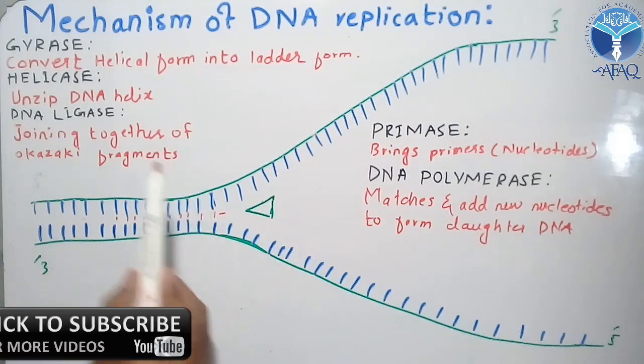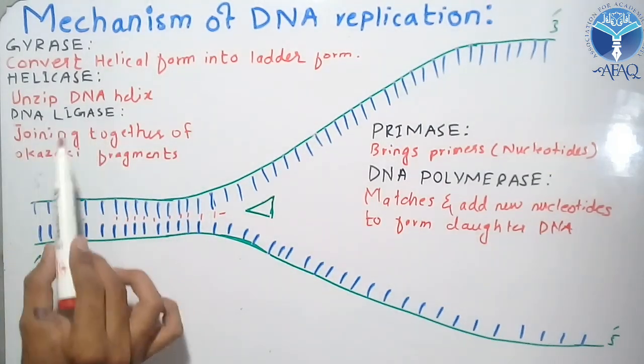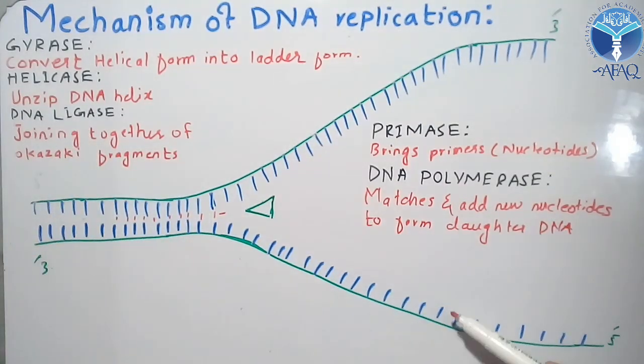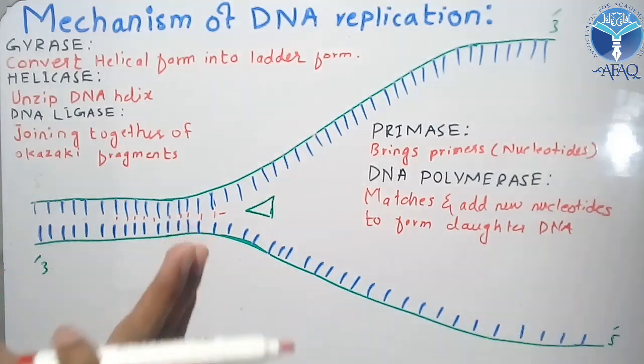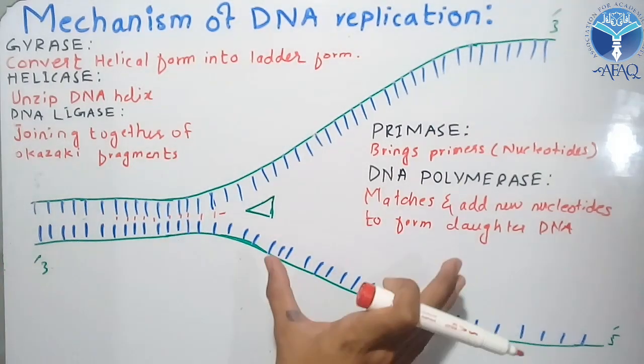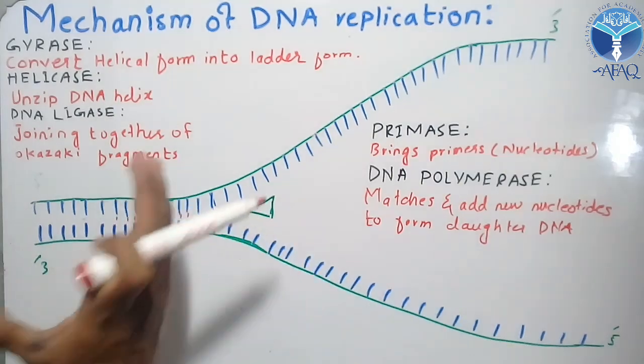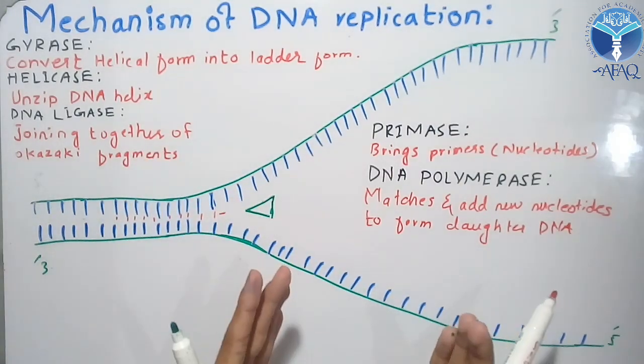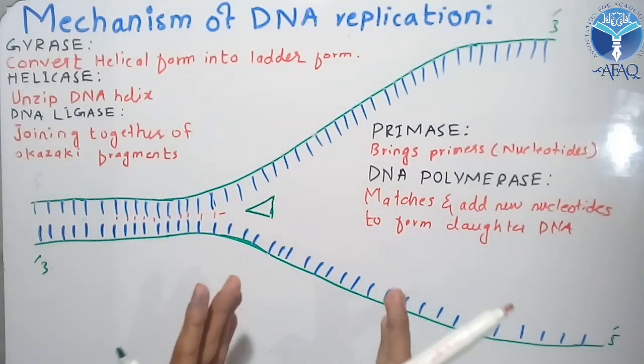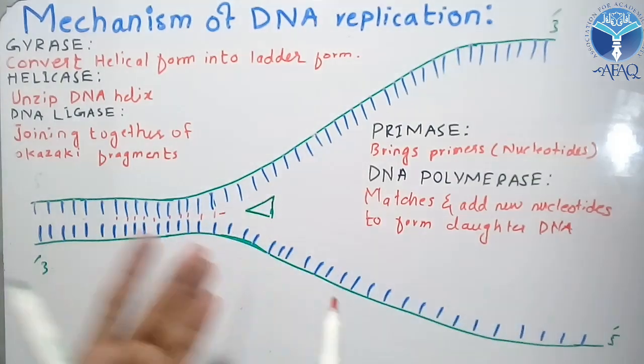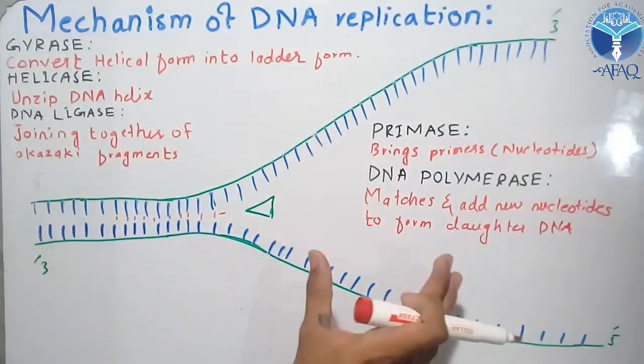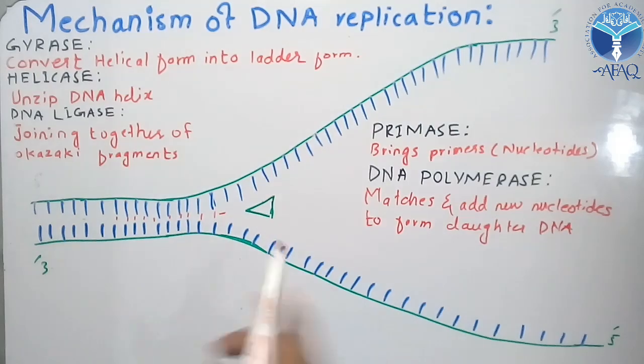DNA ligase works to join the fragments. After the strands are separated, primers are needed to start the replication process.